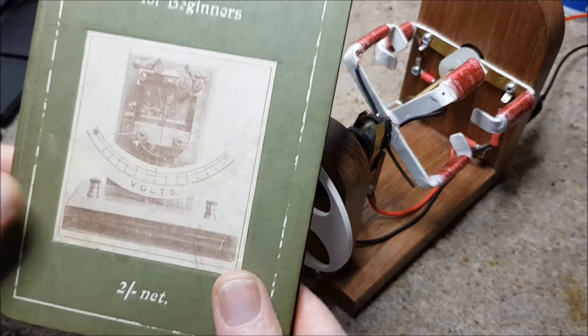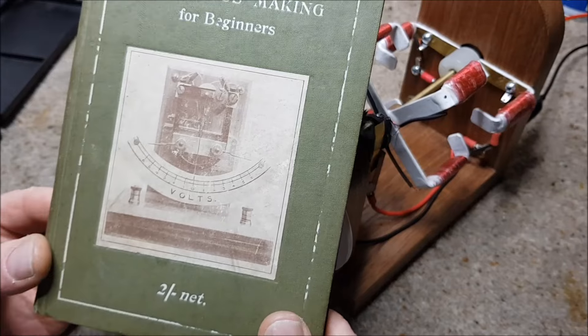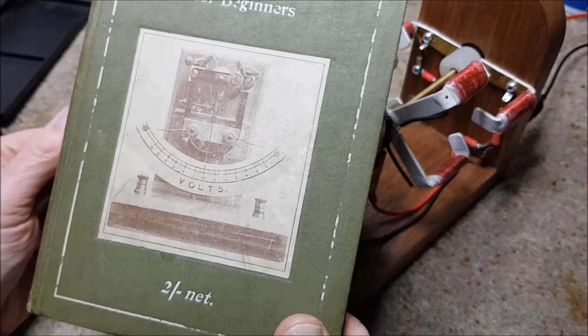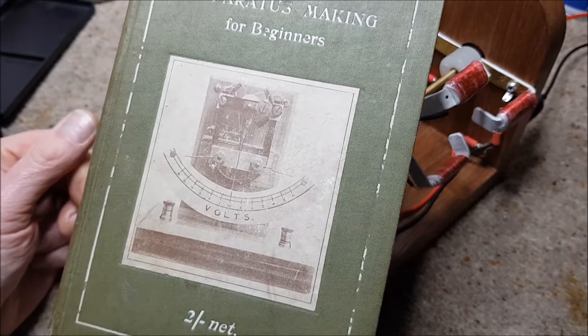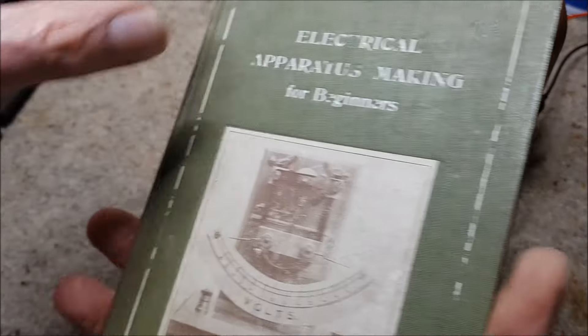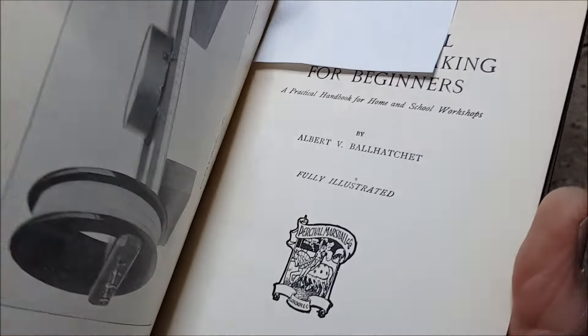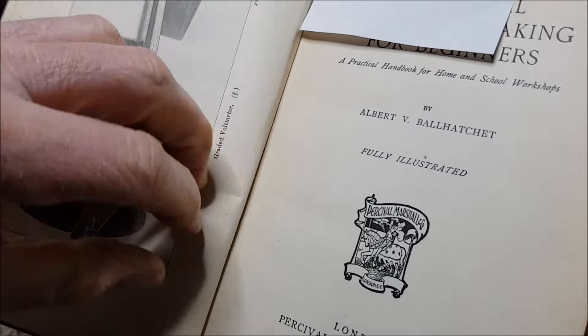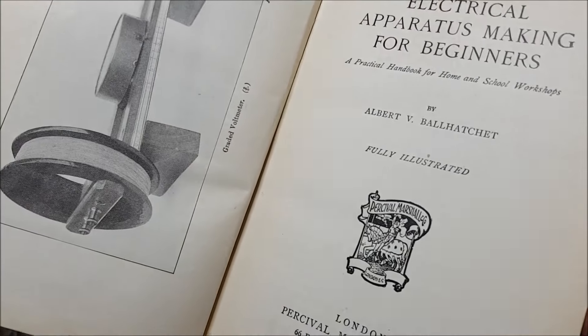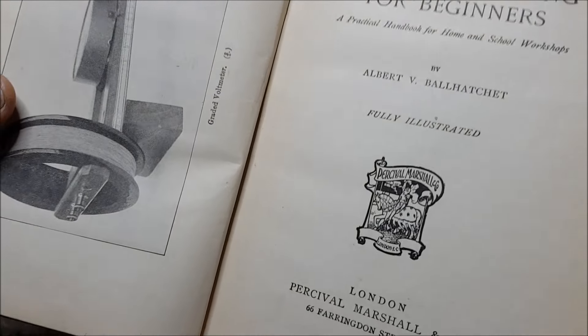Here I've got a book called Electrical Apparatus Making for Beginners. It was published in 1916 and was given to me by a friend who found it in a local junk shop. It was written by a very colorfully named gentleman called Mr. Albert V. Ball Hatchet.